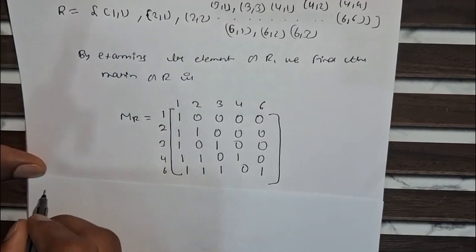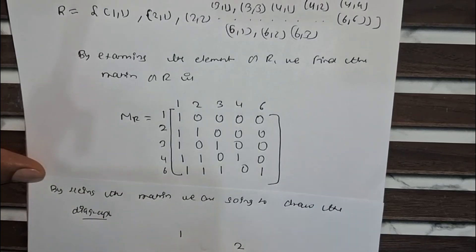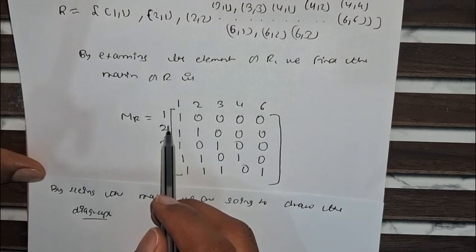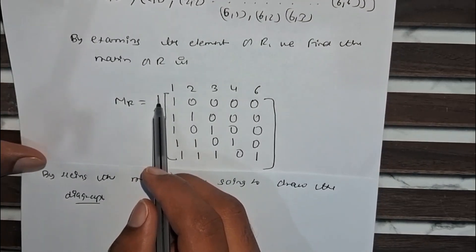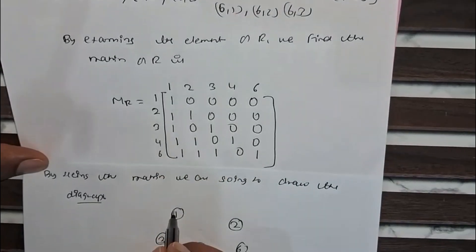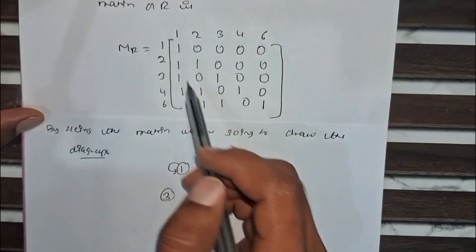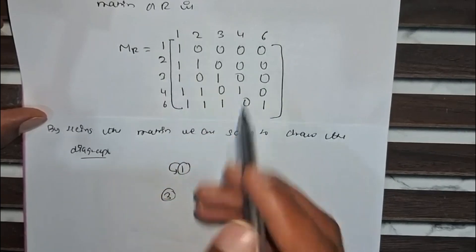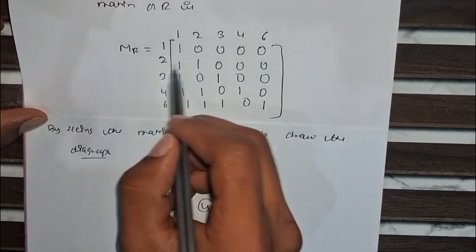From this relation, by seeing the matrix we are going to draw the digraph. First we draw the elements 1, 2, 3, 4, 6. As you can see, (1,1) is there so 1 is directed to itself. (2,1) is there so 2 is directed to 1. (2,2) is there so 2 is directed to itself.